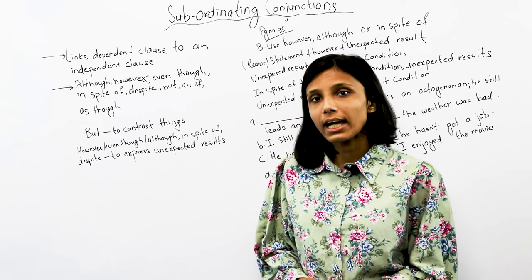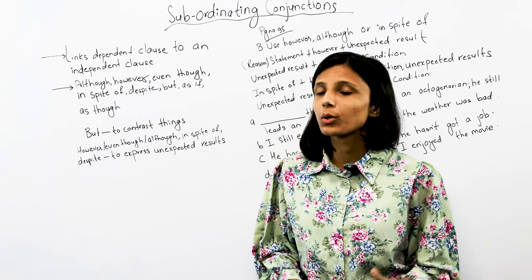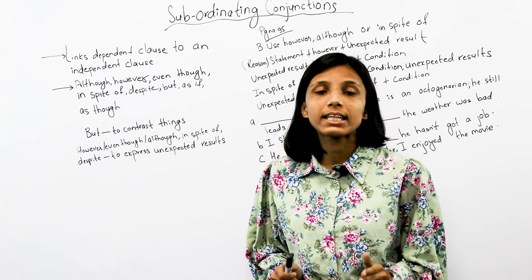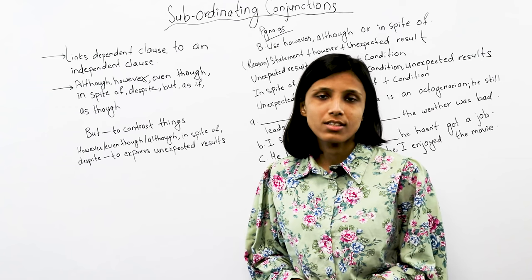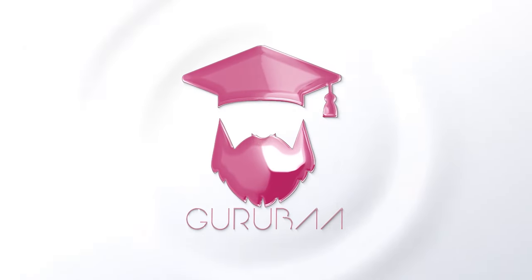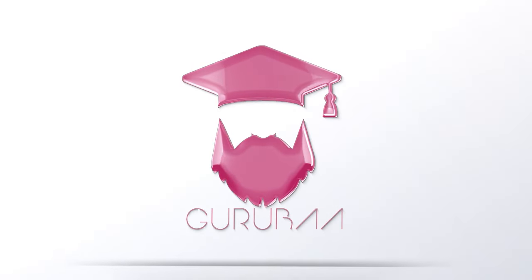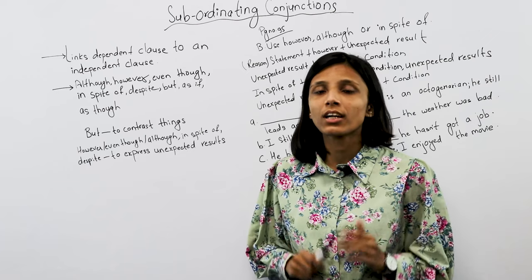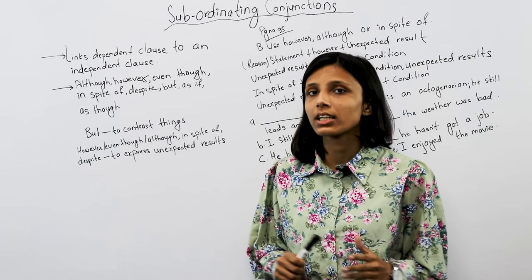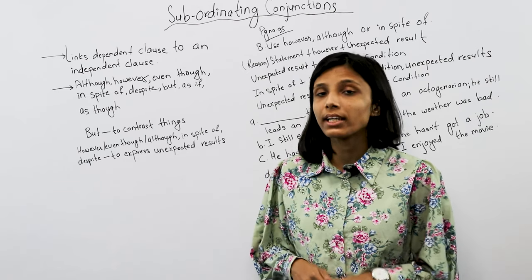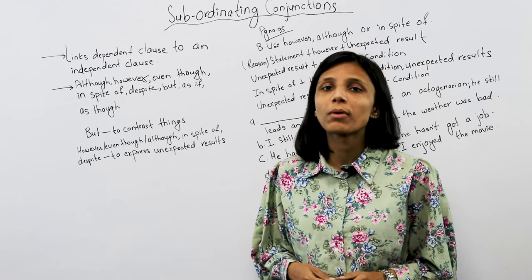In today's video, we will talk about the English book in the grammar section of subordinating conjunctions. We will discuss this and link the dependent clause and the independent clause.